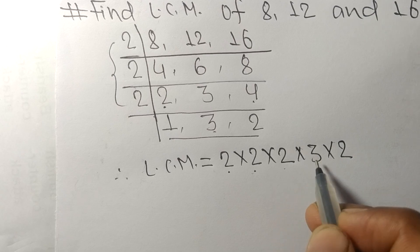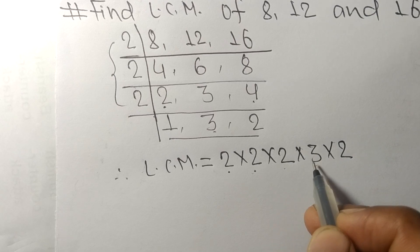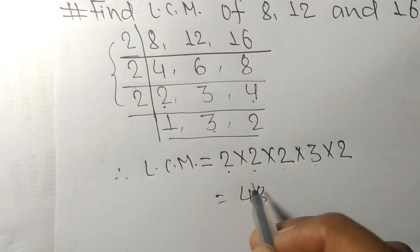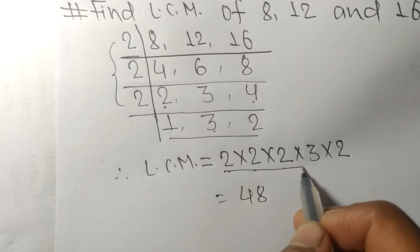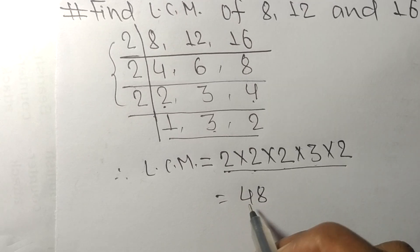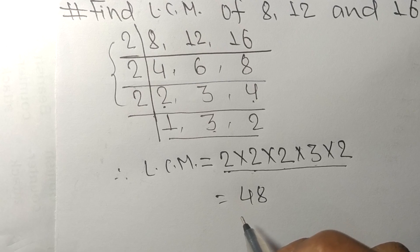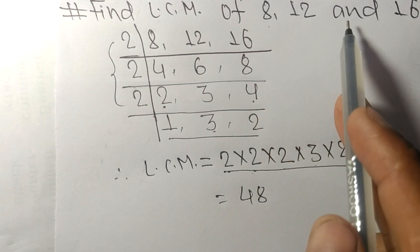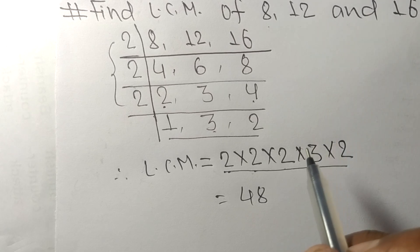By multiplying all these numbers, we got 48. So 48 is the LCM of 8, 12, and 16.